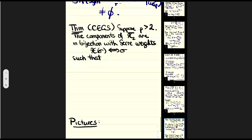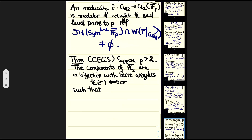In the last few minutes, I want to state the theorem I've been building towards and draw a couple of pictures. The theorem requires p at least 2, and it says that the components of X̄_2 are in bijection with Serre weights. The labeling set I suppressed earlier — the X(σ)'s — has the σ's being precisely the Serre weights, i.e., irreducible representations. This theorem holds for K an arbitrary extension of Q_p.